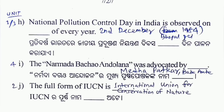National Pollution Control Day in India is observed on 2nd December every year. This is Unit 1 and Unit 3. The reason is the Bhopal gas tragedy of 1984, which occurred on 2nd December. So the answer is 2nd December — National Pollution Control Day.